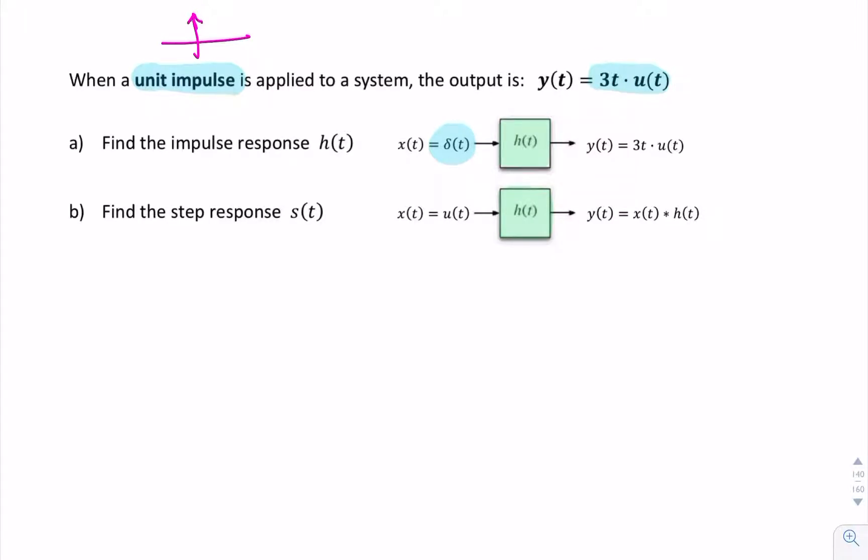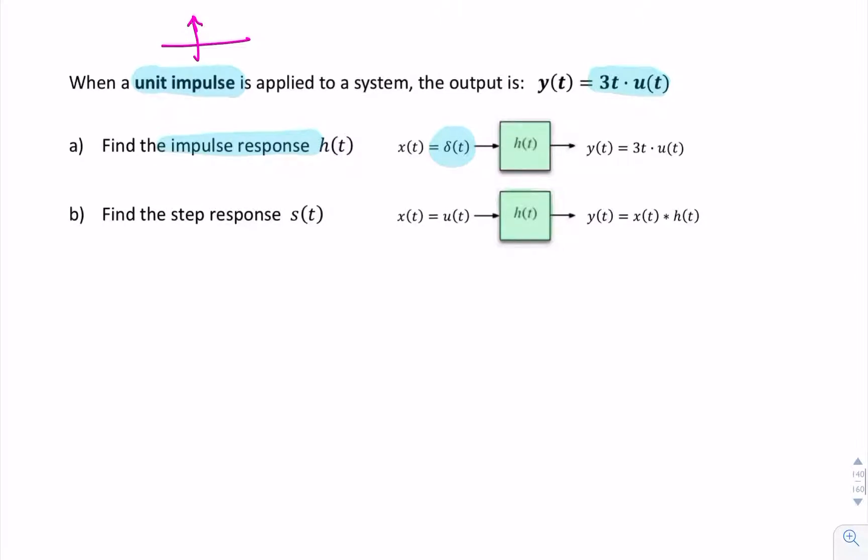And the question is, what's the impulse response? Well, by definition, the impulse response is the output when the input is an impulse. So the impulse response is actually given in the question. We don't need to do any work to find that. So that's part A. Part A is just 3t u(t).